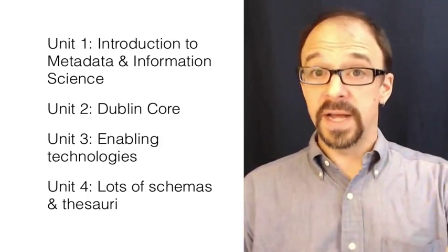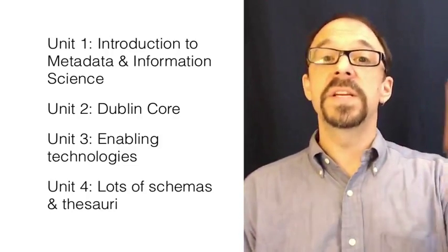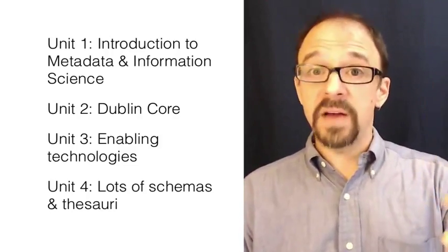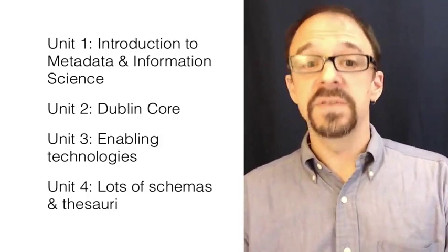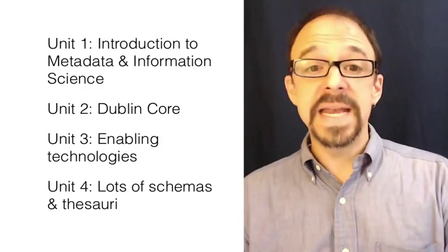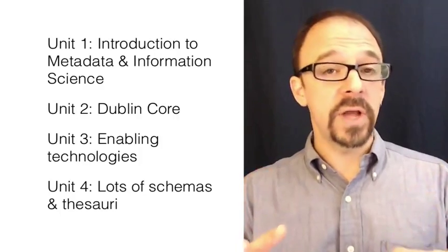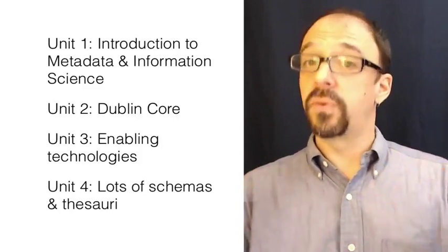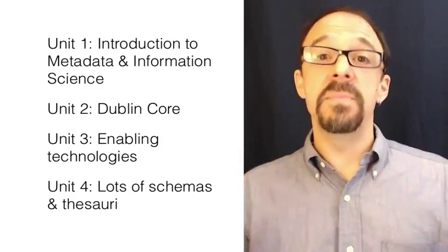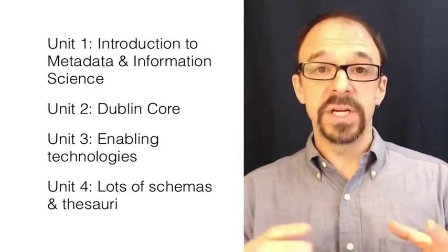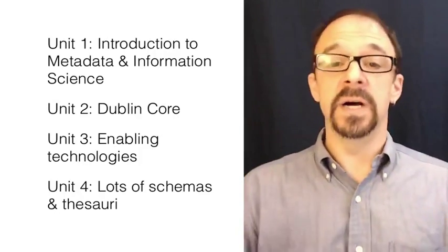We looked at the Art and Architecture Thesaurus, the Thesaurus of Graphic Materials, and the Thesaurus of Geographic Names. We took our first look at provenance with PREMIS, and we looked at METS, which is kind of a metadata schema — a metadata schema to describe metadata schemas.